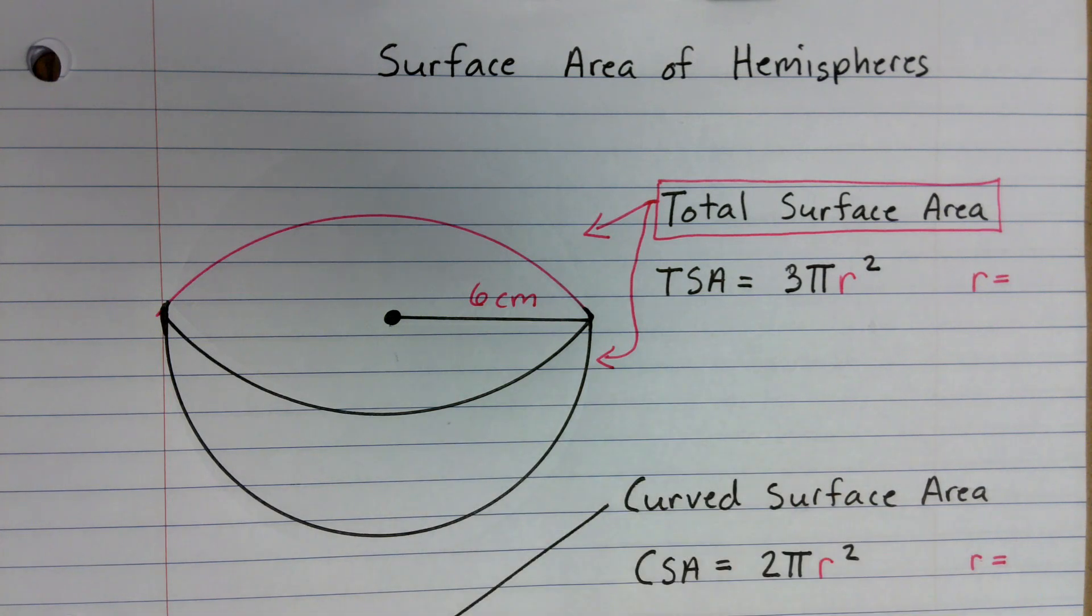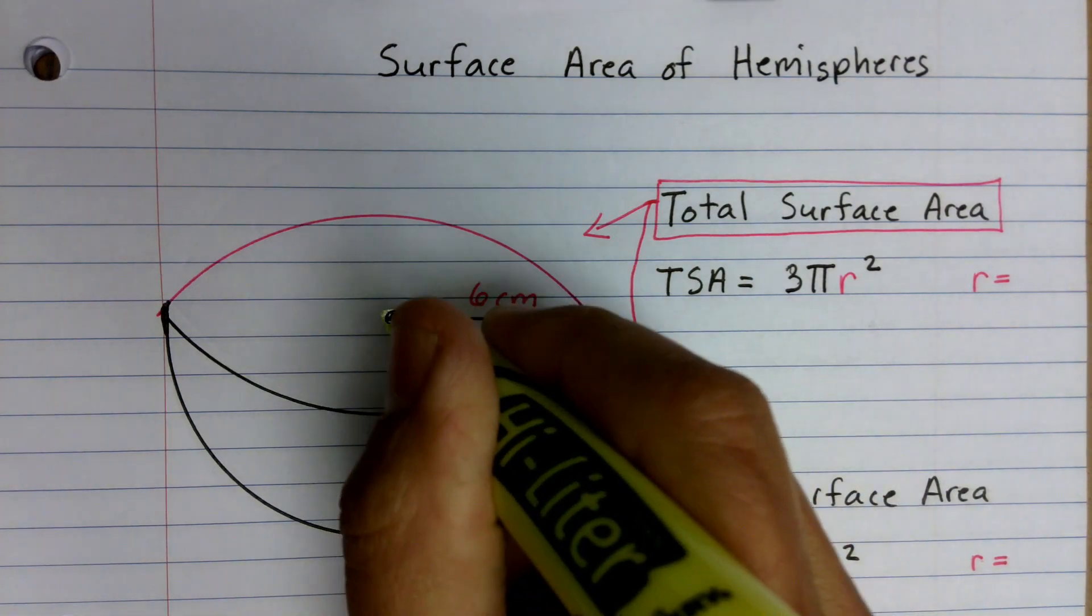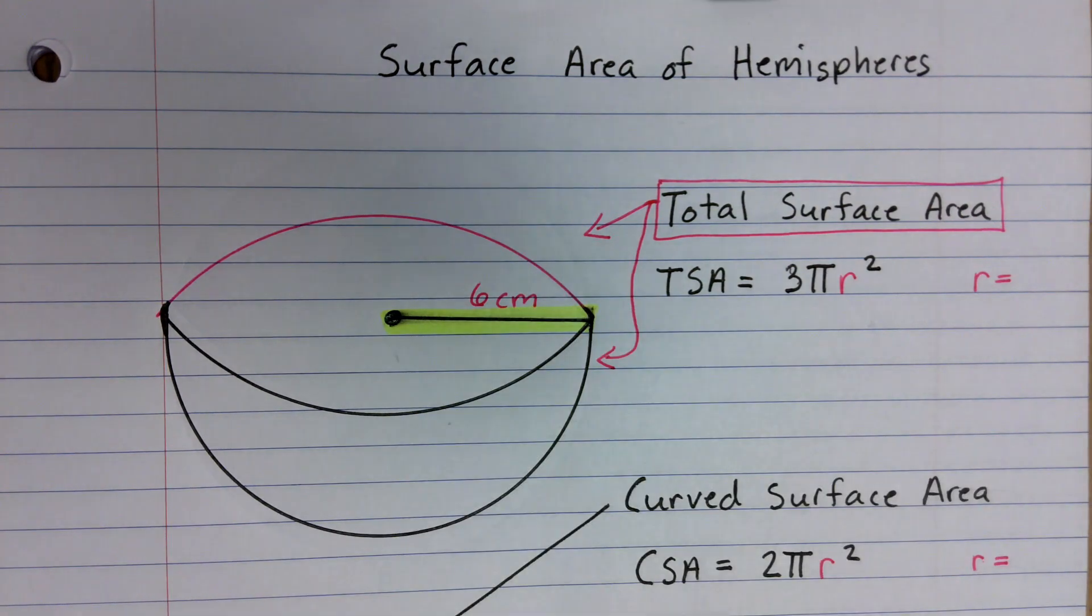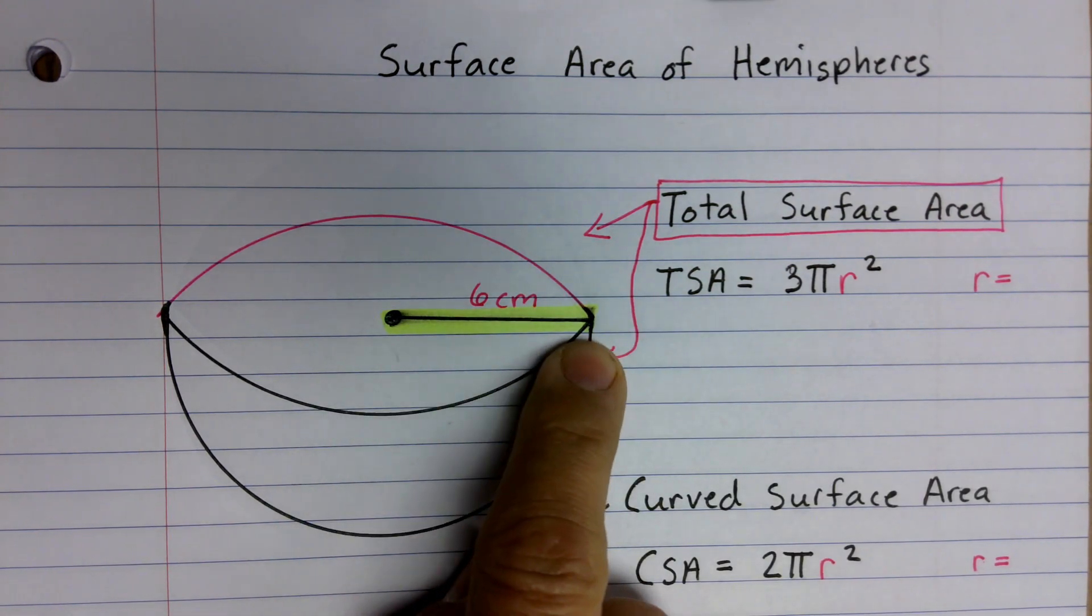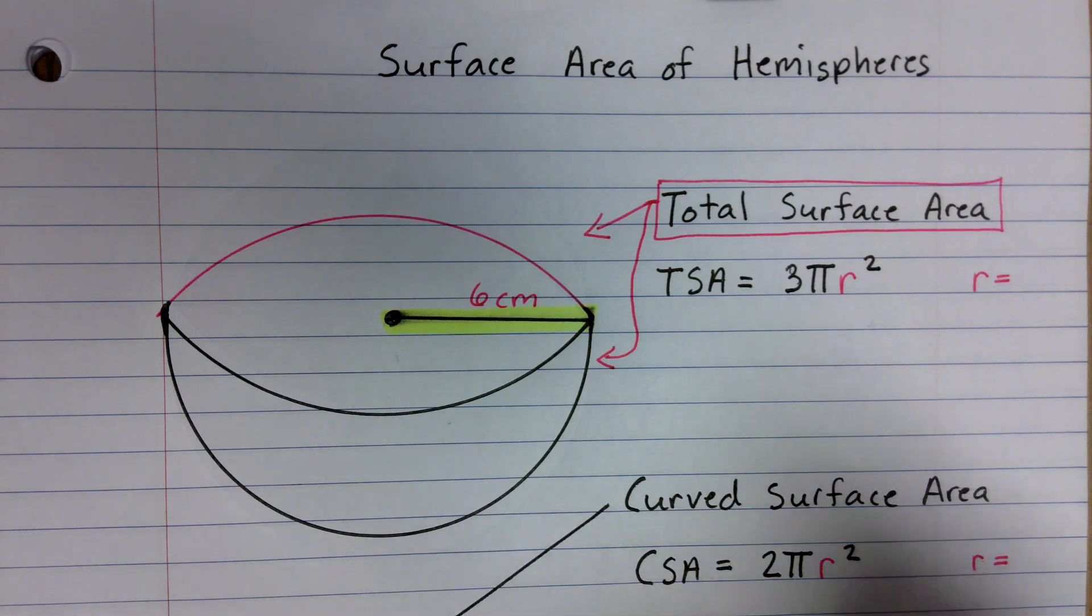But let's start out by doing total surface area. So when you get an image like this and they tell you they want you to find the total surface area of this hemisphere, we're going to go ahead and find our radius, which in this case, notice I have a radius, I don't have a diameter, so it's that half value from the middle over to the side of the shape.